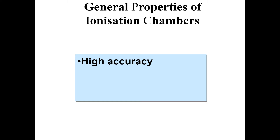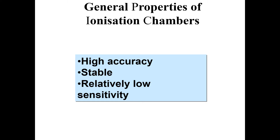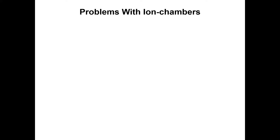Some general properties of the ionization chamber include high accuracy — the sensing capability is highly accurate. It is also stable, meaning it is not easily damaged by incoming radiation and can work for a longer duration of time. However, one drawback is that it has relatively low sensitivity.